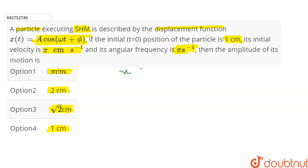So we have x(t) = A cos(ωt + φ). At the initial position, that is when time t = 0, the position of particle is 1 cm.